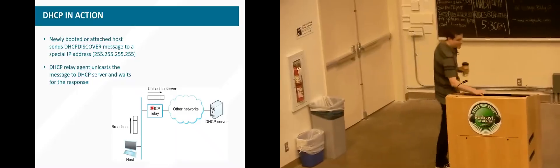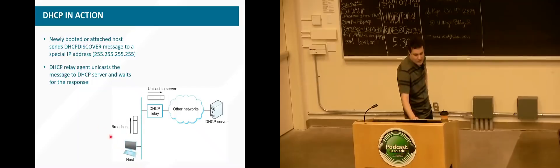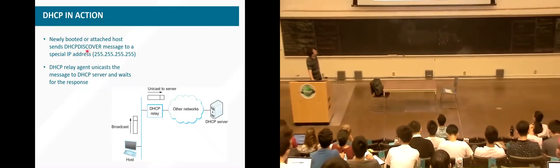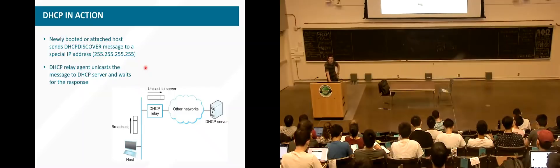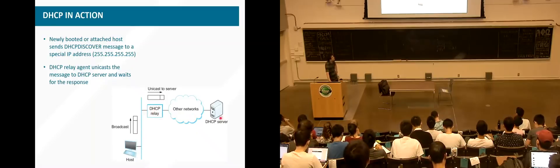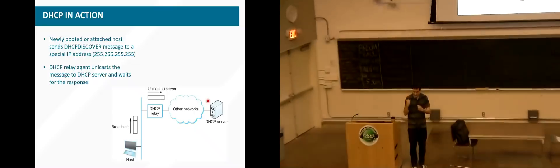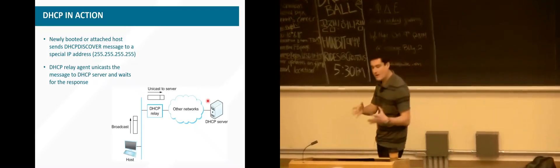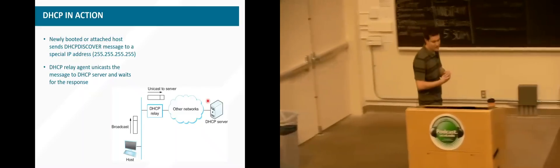These servers maintain a pool of addresses they can give out to people on their network. The idea is that whenever the host joins the network, it sends a message to a special broadcast IP address — the all-ones address, 255.255.255.255. That's a broadcast address, meaning everyone on the network can hear this message. One of the nodes that will hear it is the DHCP server, which takes that request, finds one of its unused IP addresses, and sends a message back to that host with the address assignment. Once that exchange completes, the host has all the network information it needs to communicate.